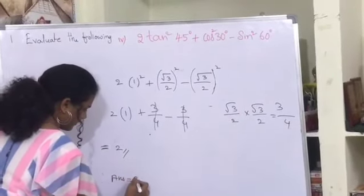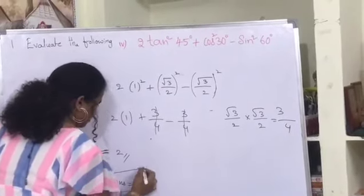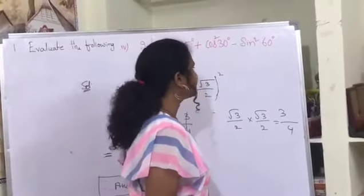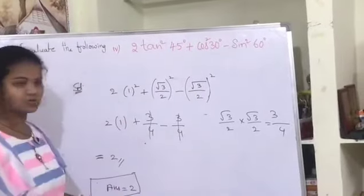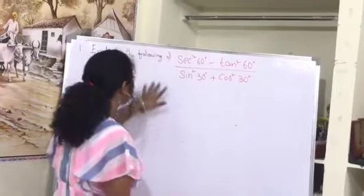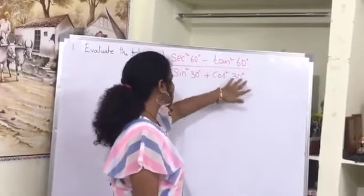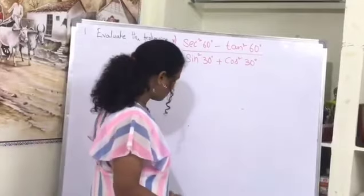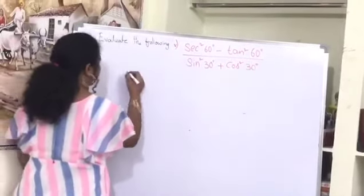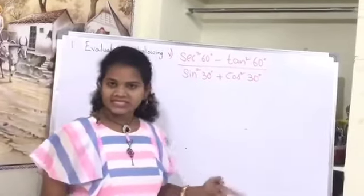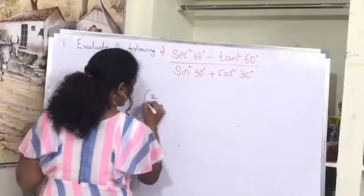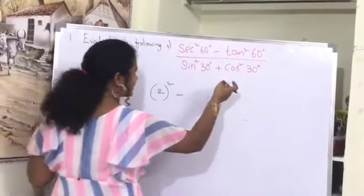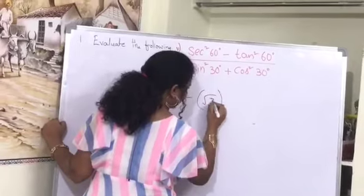Therefore the answer for the fourth problem — 2 tan squared 45 degrees plus cos squared 30 minus sin squared 60 — equals 2. Now for the fifth question: secant squared 60 degree, where secant 60 equals 2, so 2 squared minus tan squared 60, and tan 60 equals root 3, so root 3 whole squared.